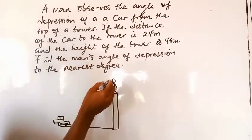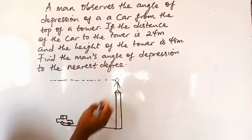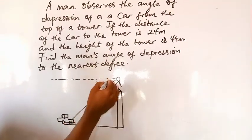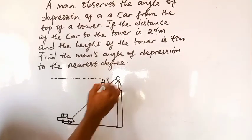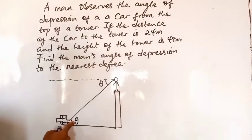So the man is observing the car. This is his horizontal viewing. For him to view this car, he needs to drop his sight down. So the angle formed there is his angle of depression, which is alternate to this angle here.